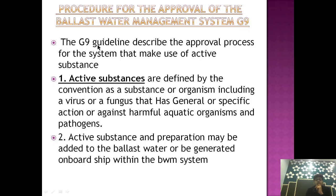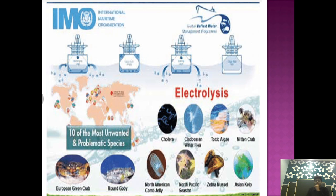G9 procedure mainly talks about active substances. So what is an active substance? Active substances are defined by the convention as a substance or organism, including a virus or a fungus, that has general or specific action against harmful aquatic organisms and pathogens. This means organisms like cholera, toxic algae, Asian kelp — organisms which are proven to be invasive in different marine environments. So you create a chemical or active substance which can be effective against these organisms.